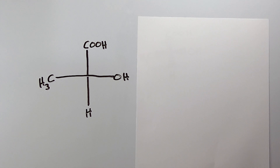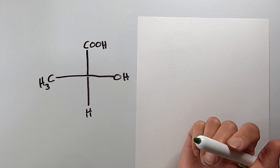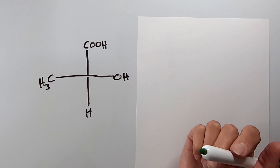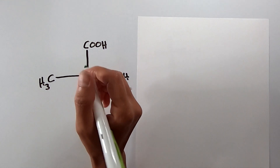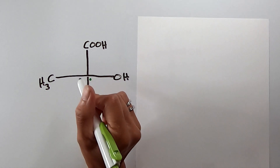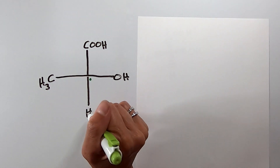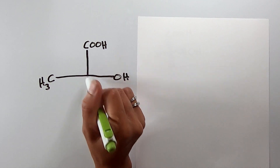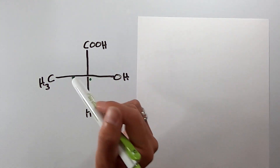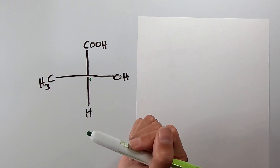Here is an example of a Fischer projection of an organic compound, and we're going to determine RS configuration. First, identify the chiral carbon, which is the carbon attached to four different things with four single bonds. We have a hydroxide, a carboxylic acid, a methyl group, and a hydrogen.